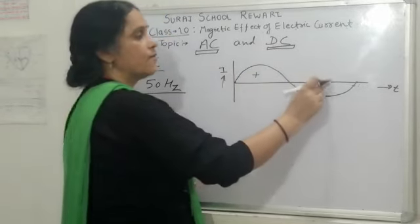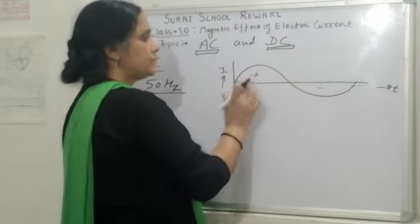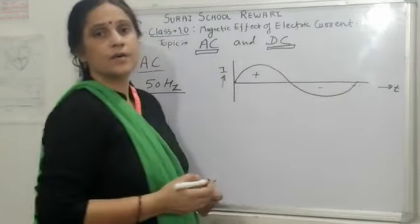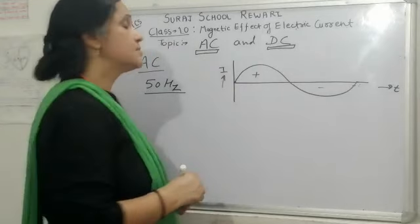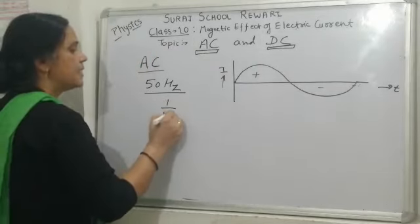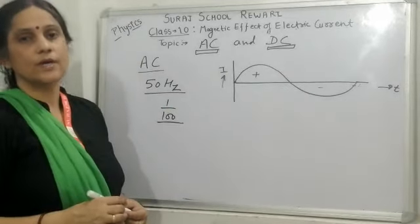Half for clockwise, half for anticlockwise. It means in one second, the direction of current changes twice in each rotation. And 50 rotations in one second, that means its time period is 1 by 100. 100 times direction of current changes in one second.